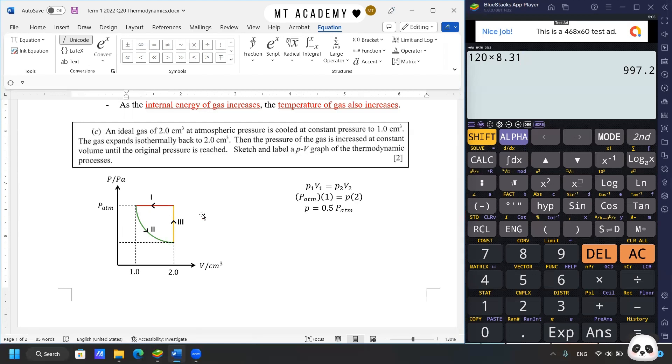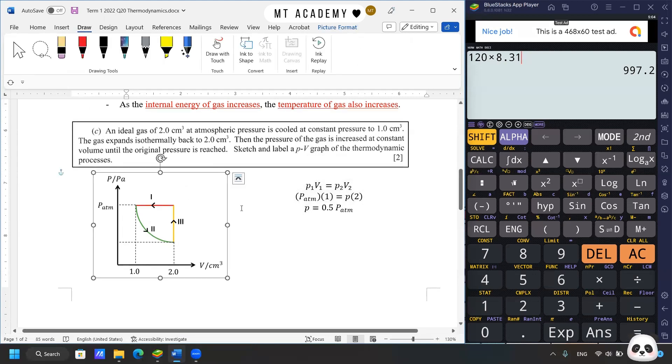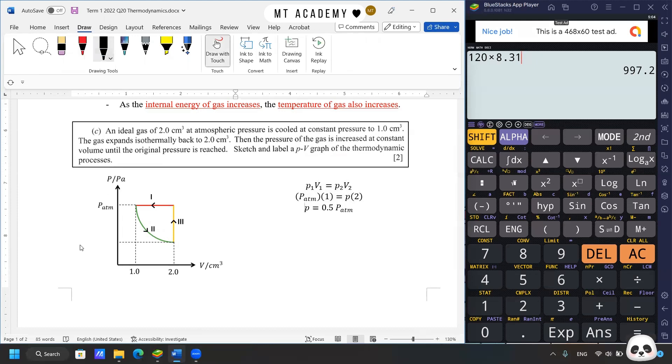We can try to fit in the values in the graph. We have volume from 1 to 2 cm³, atmospheric pressure, and something missing here. This is a simple calculation: P₁V₁ equals P₂V₂. From here we can quickly obtain that the pressure at the end of the second process is 0.5 atmospheric pressure.